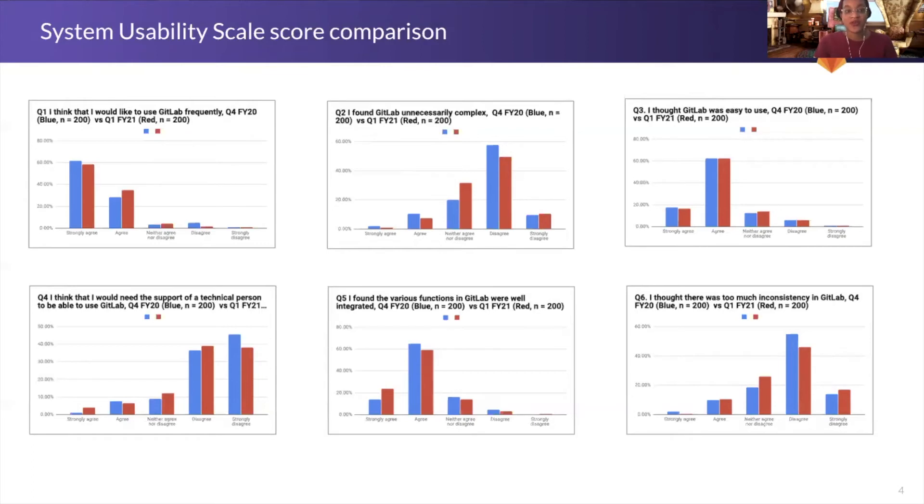we have a pretty good trend where for the questions that rate GitLab more positively, such as 'I would like to use GitLab frequently,' we tend to have more users agreeing. And for questions that rate GitLab more negatively, such as finding GitLab unnecessarily complex, we tend to have more users disagree.